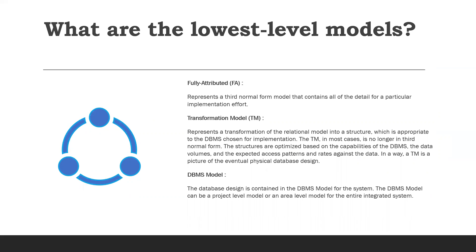What are the lowest-level models? The fully attributed model, transformation model, and DBMS model are the lowest-level models. The fully attributed model represents a third normal form model that contains all the details for a particular implementation effort. The transformation model represents a transformation of the relational model into a structure appropriate to the chosen DBMS — it is no longer in third normal form, with structures optimized based on DBMS capabilities, data volume, and expected access patterns. The DBMS model contains the actual database design for the system and can be a project-level or area-level model.